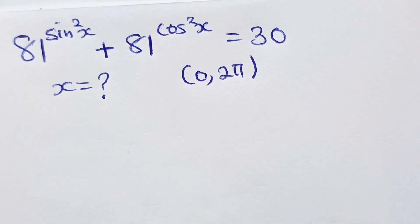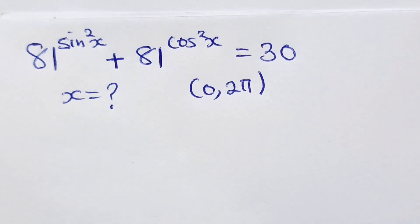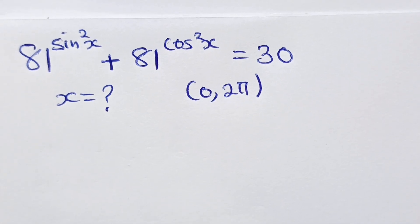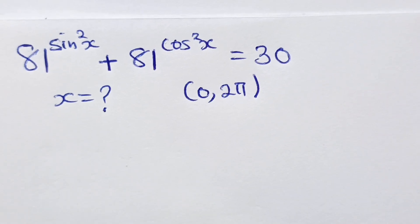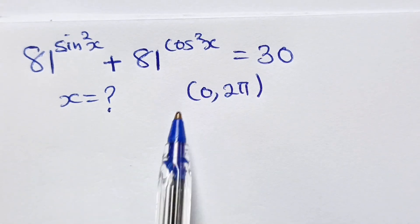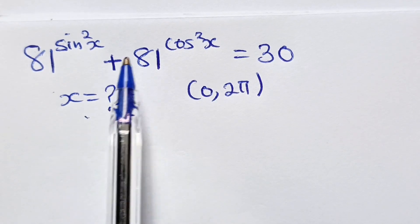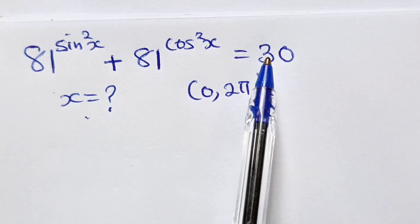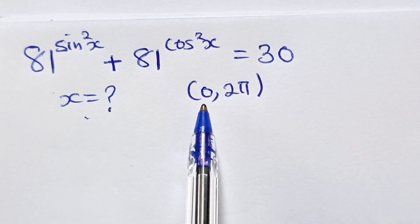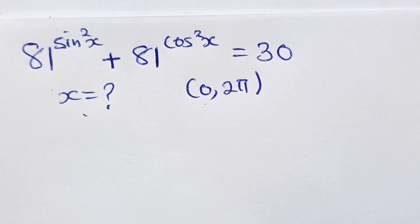Welcome back to my channel. I'm not showing my face today — I'm tired, so let's dive into the question. Today we have an amazing question to solve: we are asked to find the values of x if 81 to the power of sin²x plus 81 to the power of cos²x equals 130, with x in the range 0 to 2π, or 0° to 360°.